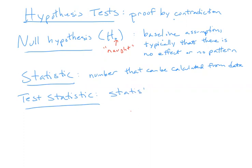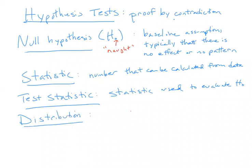In particular, it's the statistic you choose to summarize the data. So this is the general setup: you make some initial assumption and decide what statistic you're going to use, how you're going to summarize the data. The next definition is distribution. In general, this is a probability idea — a distribution is a list of possible values of a random numeric quantity, along with their probabilities.